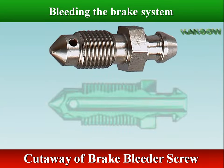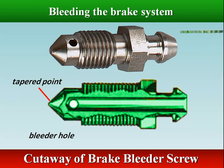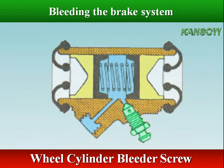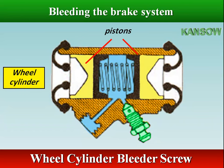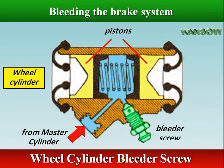When the screw is loosened, the tapered point uncovers the bleeder hole. This permits air to move up around the point, through the cross hole and out the center passageway. When the screw is tightened, the point seals the opening.